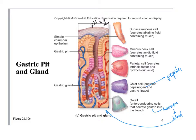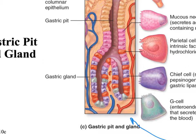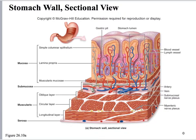So those cells — parietal cells, chief cells, and G cells or enteroendocrine cells — are the key secretory cells. Parietal cells release HCl, chief cells release pepsinogen which becomes active pepsin as it moves up toward the lumen. The gastric pit opens to the lumen and there are three layers of muscle on the outside.